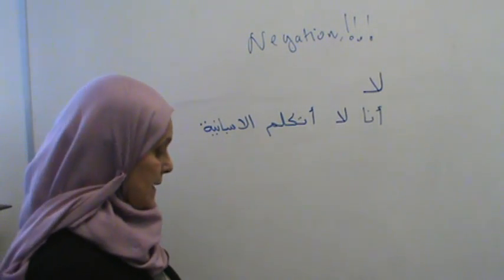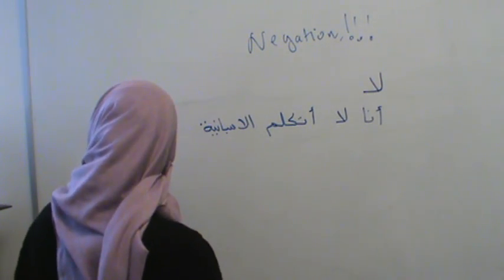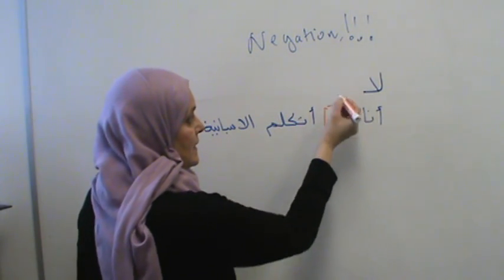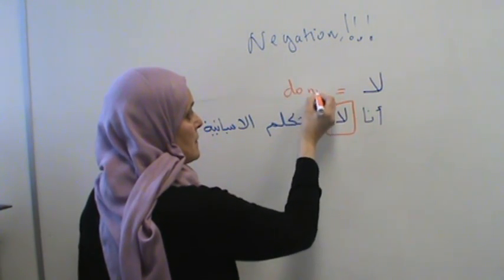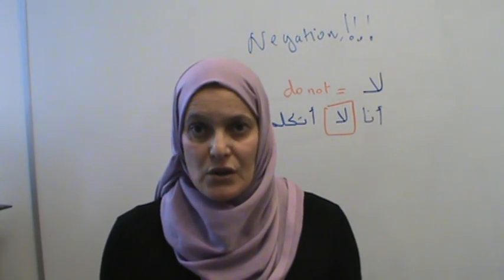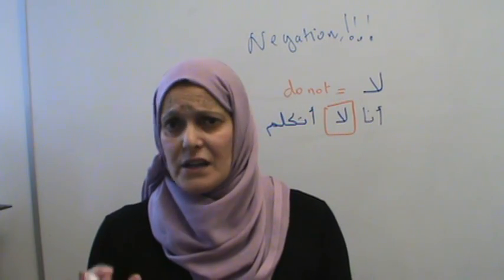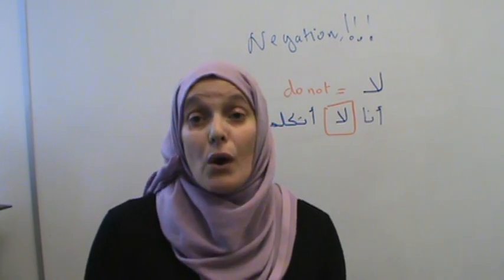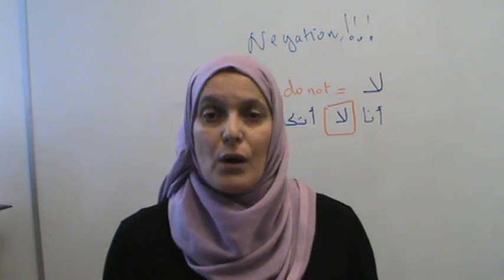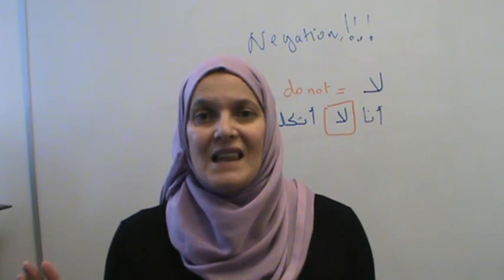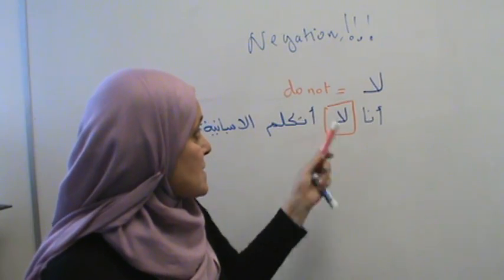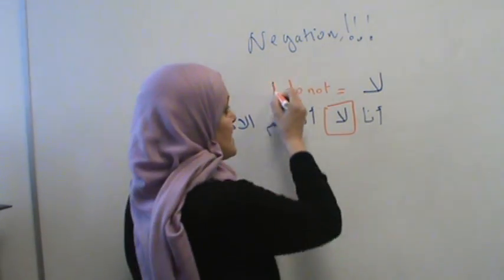So 'la atacallam al-Ispania' — you see that 'la' is placed right before the verb. 'La' equals 'don't' or 'do not.' It does not affect your conjugation at all. If you know how to say 'Ana askonu fi Chicago' — I live in Chicago — then 'I don't live in Chicago' is simply 'Ana la askon fi Chicago.' This is present tense negation.